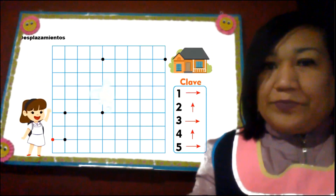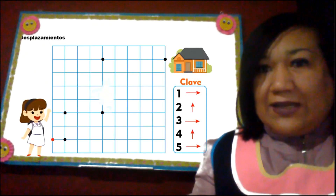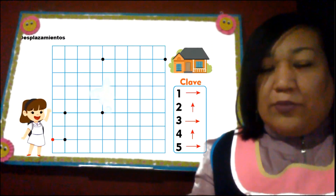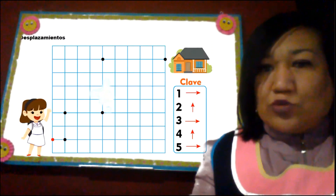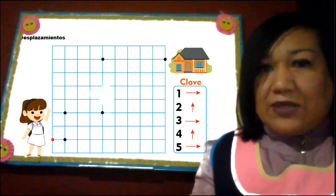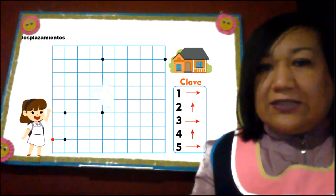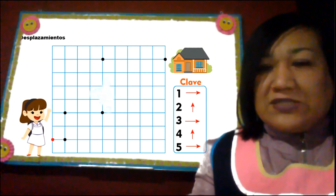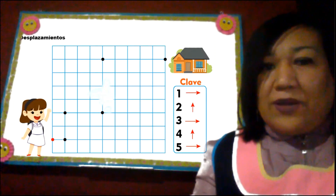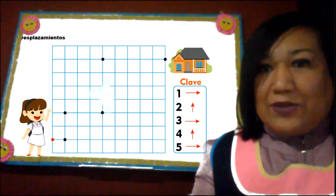Aquí también podemos utilizar estos desplazamientos mediante claves y números. Por ejemplo, la niñita que quiere llegar a su casa va a utilizar la siguiente clave: una flecha a la derecha, dos flechas para arriba, tres flechas para la derecha, cuatro flechas para arriba y cinco flechas para la derecha. De esta forma, cumpliendo estas claves, vamos a poder llegar al camino final.